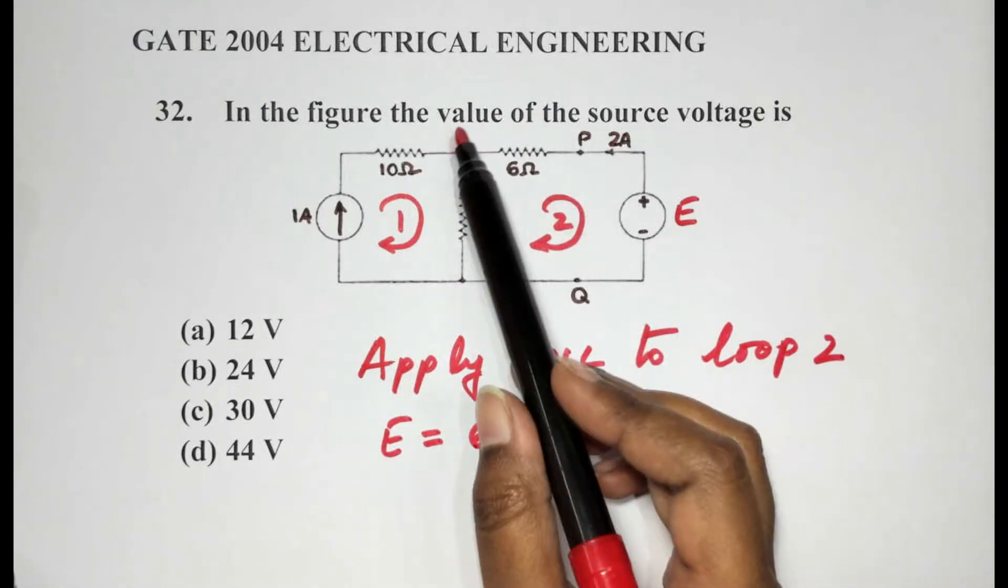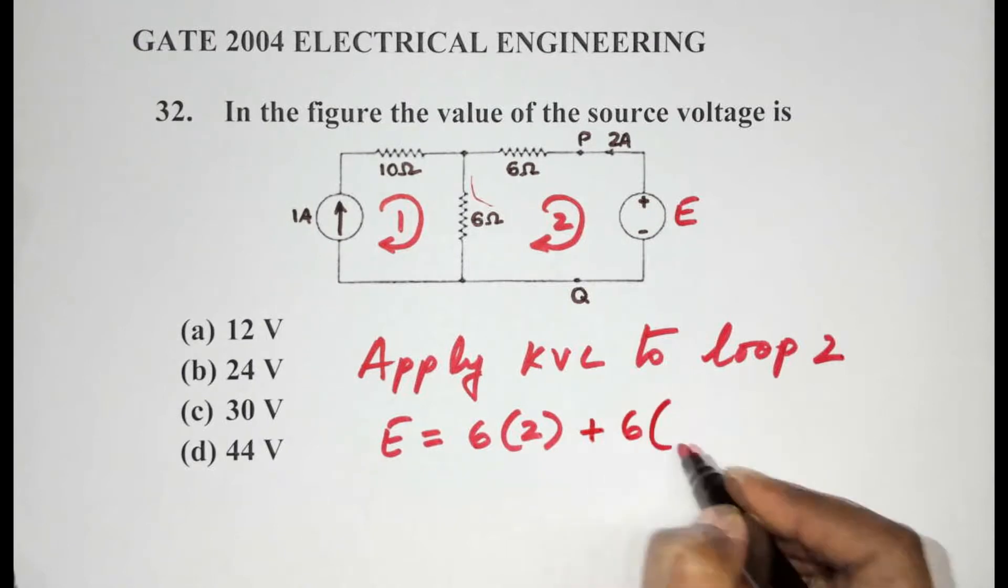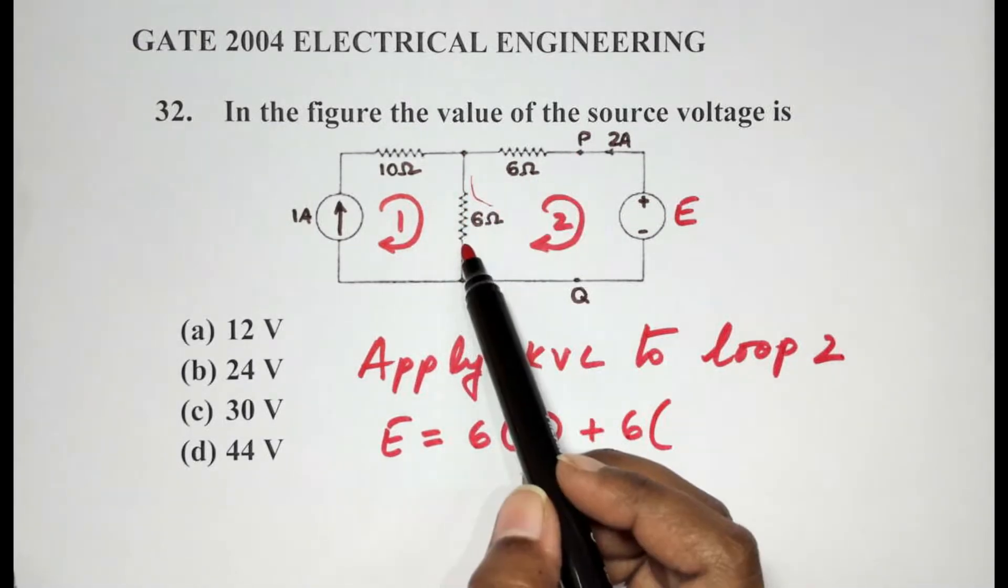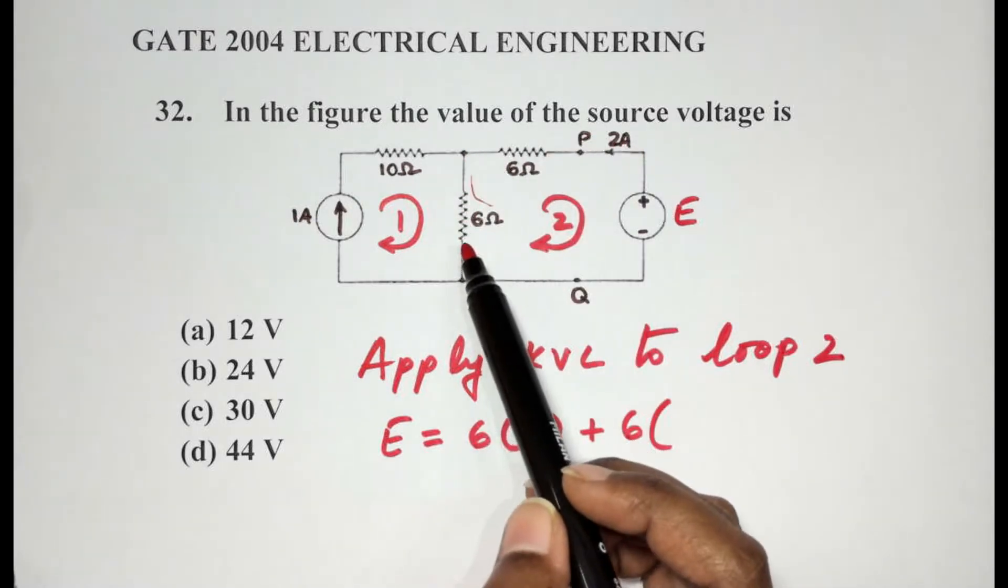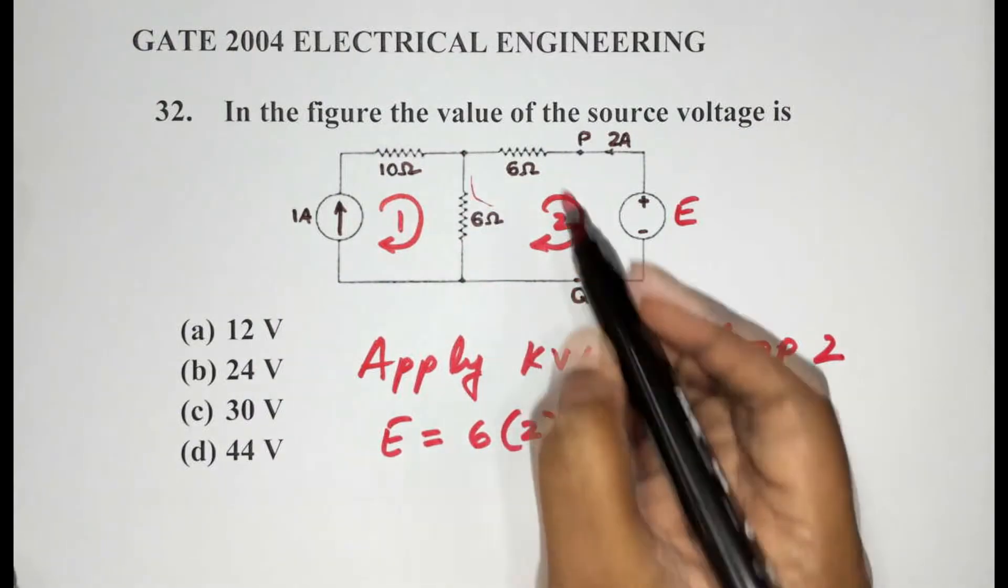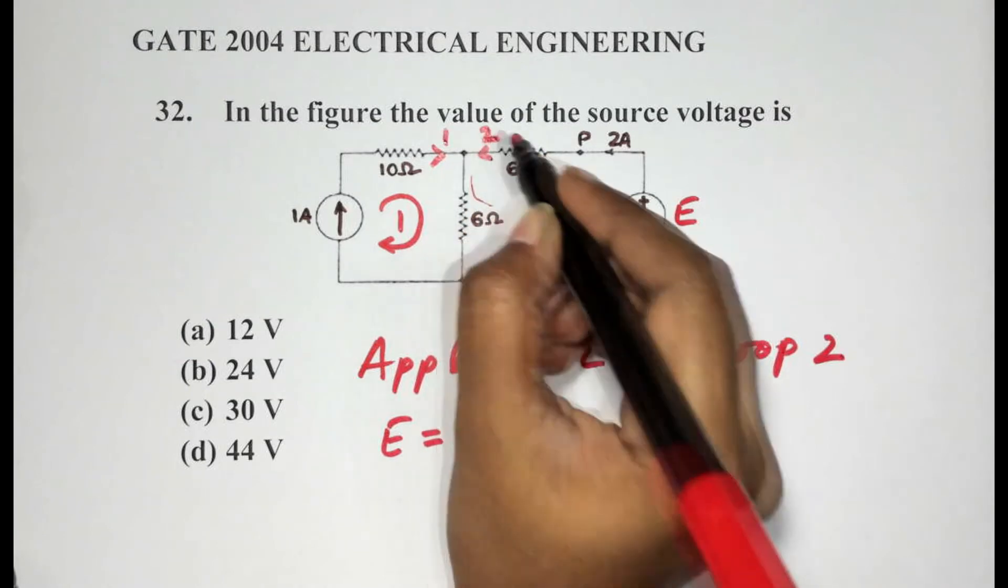And then plus 6 times... Here we have two currents passing through this branch here. The first current is 2 amps which is passing through here, and the second is 1 amp which is also passing through the same direction. Here we have 1 amp and here we have 2 amps, both passing through this branch and in the same direction.